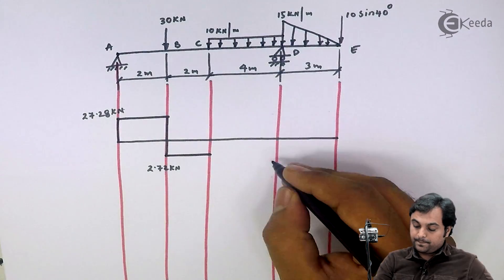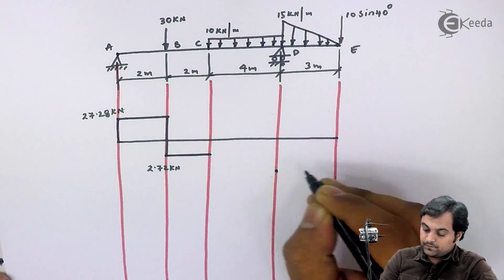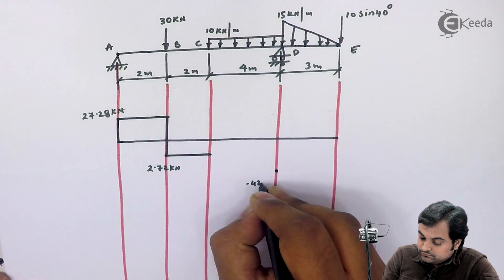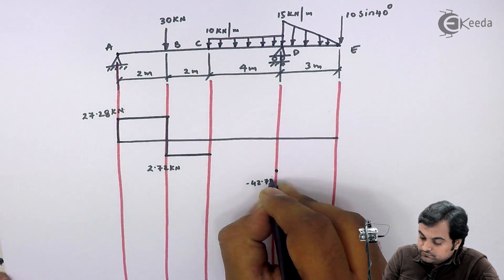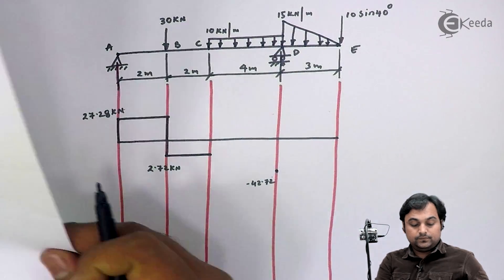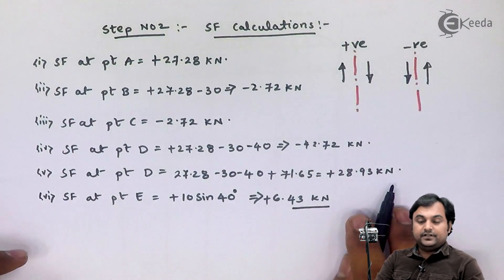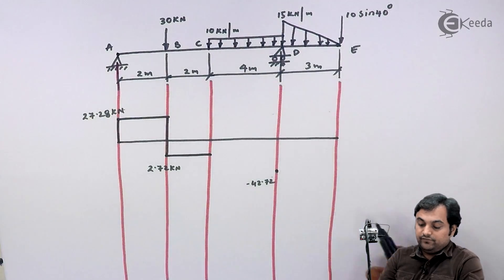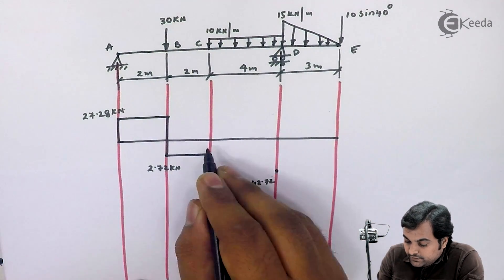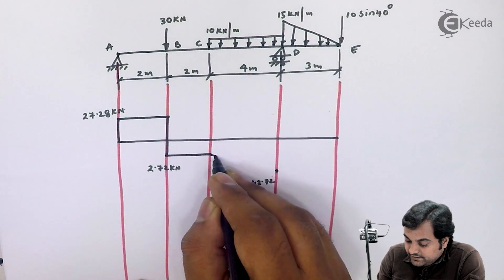At D we are having two values — one is minus forty-two point seven-two, and the other value is plus twenty-eight point nine-three. Here I'll join between C to D; since there is UDL, the shear force should be an inclined line.